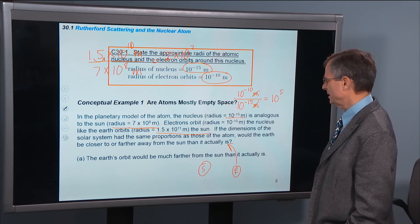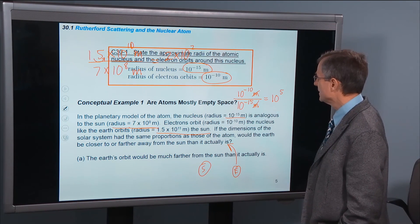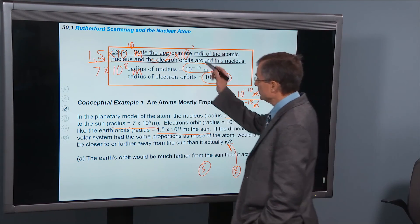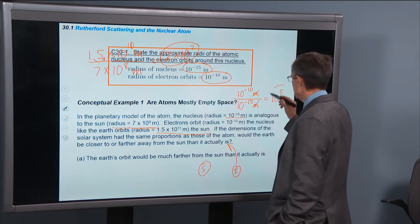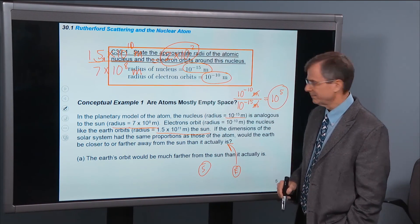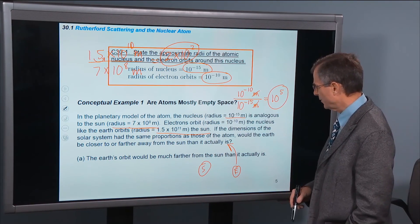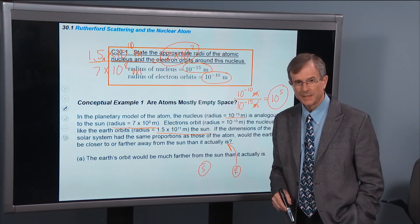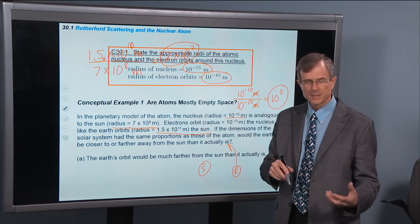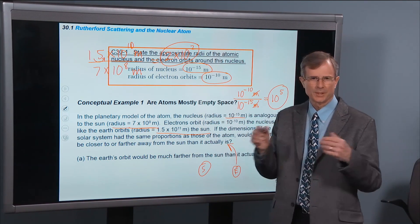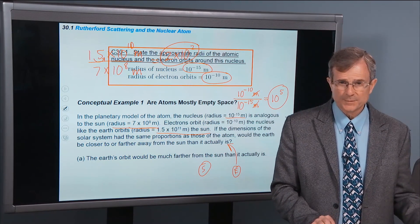That is a much smaller ratio than the atomic ratio. So the answer is that the earth's orbit would be much farther from the sun than it actually is, if the earth-sun system were analogous to an electron-nuclear system.